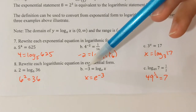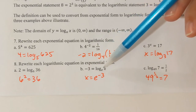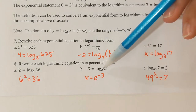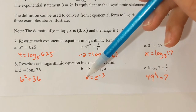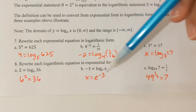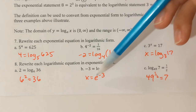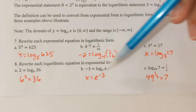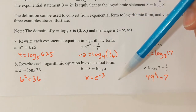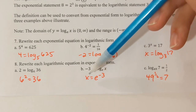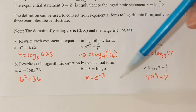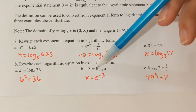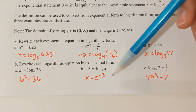Part b: -3 = log_e(x). x is the input, so it goes alone in the exponential form. e is the base — and of course we're talking about the number e. Negative three is the y value. So x = e^(-3) is my equation rewritten into exponential form.